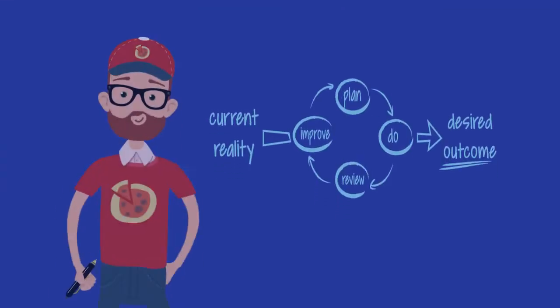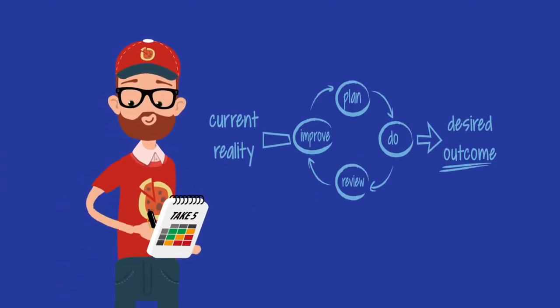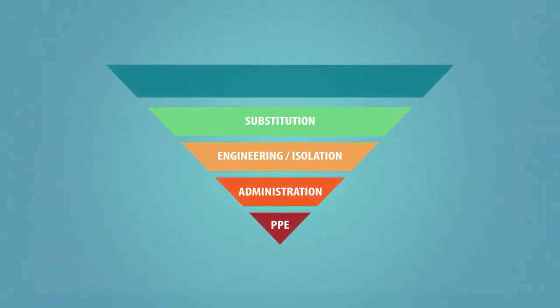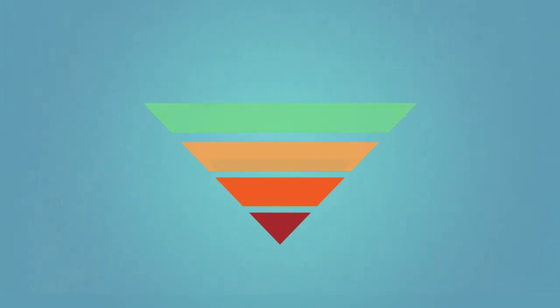Plan and implement controls to eliminate or reduce risks before you proceed with your task. Some types of controls are more effective than others. Use the hierarchy of controls to choose the best method.